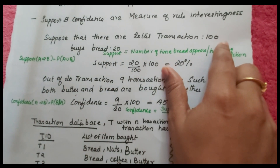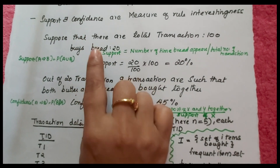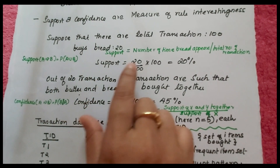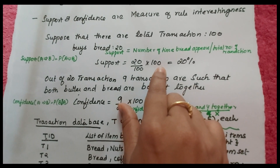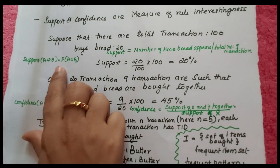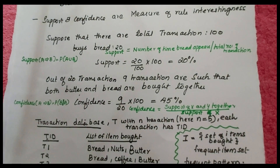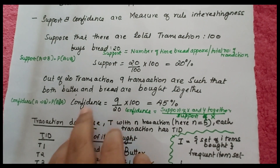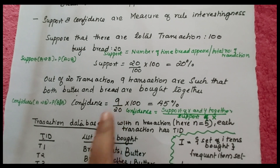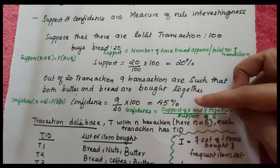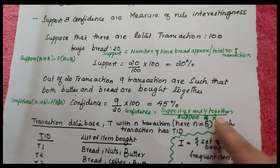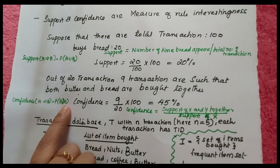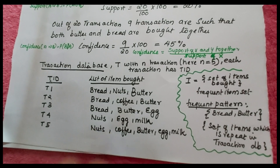Suppose there are 100 total transactions and 20 of them involve buying bread. Support equals the number of times bread appears divided by total transactions: 20 divided by 100, giving 20%. Support is also taken as the probability of A union B. Out of those 20 transactions, 9 have both bread and butter purchased together. Confidence equals 9 divided by 20 into 100, giving 45%. Confidence equals support of X and Y together divided by support of X, which is also the probability of B given A.